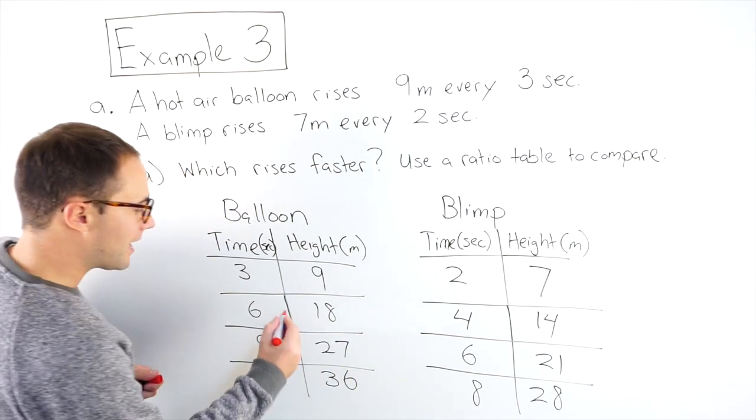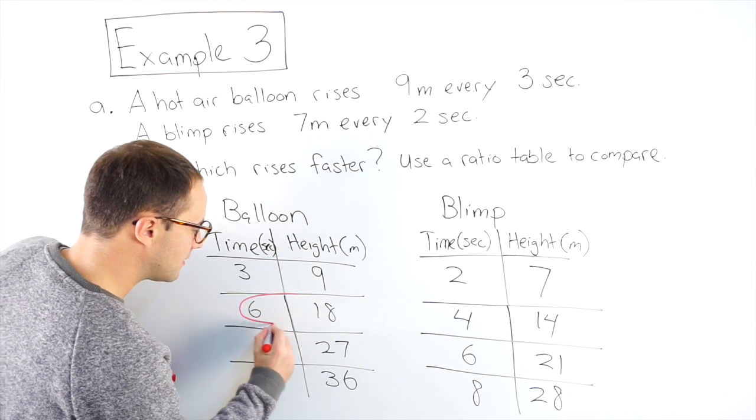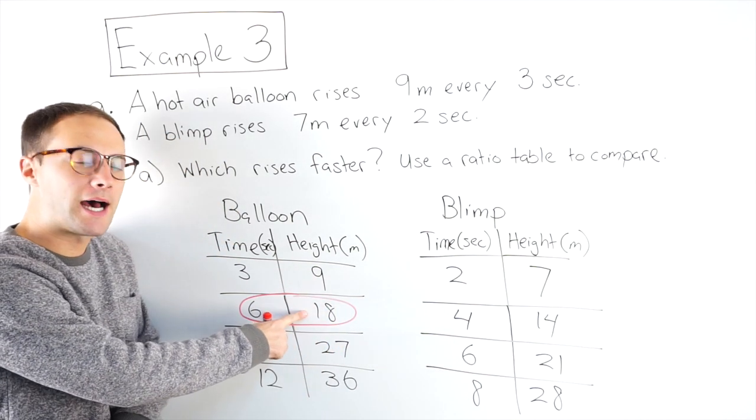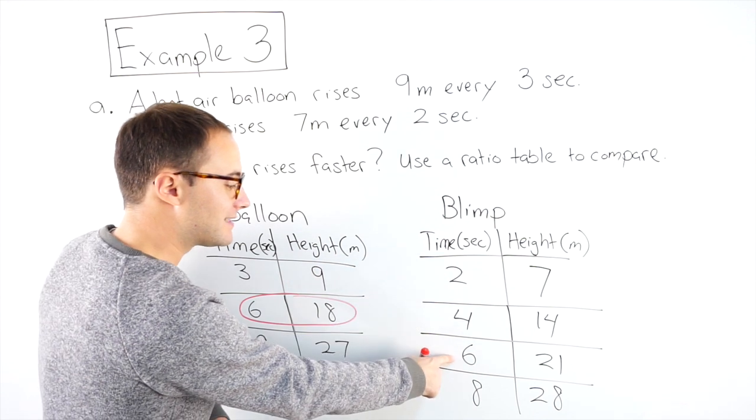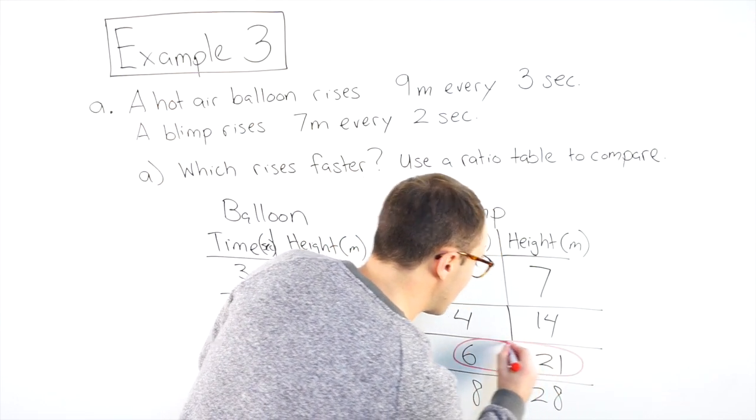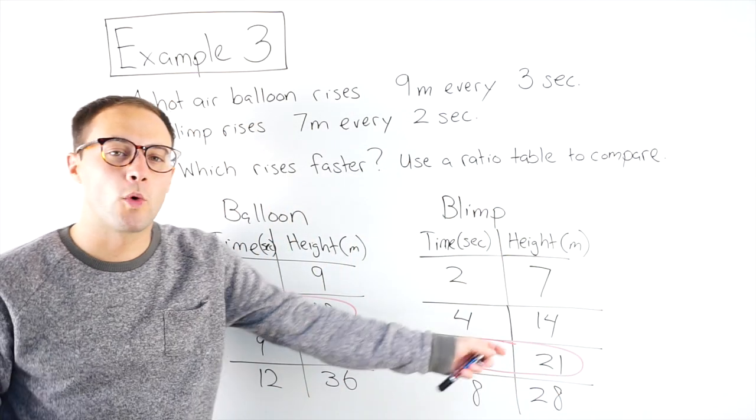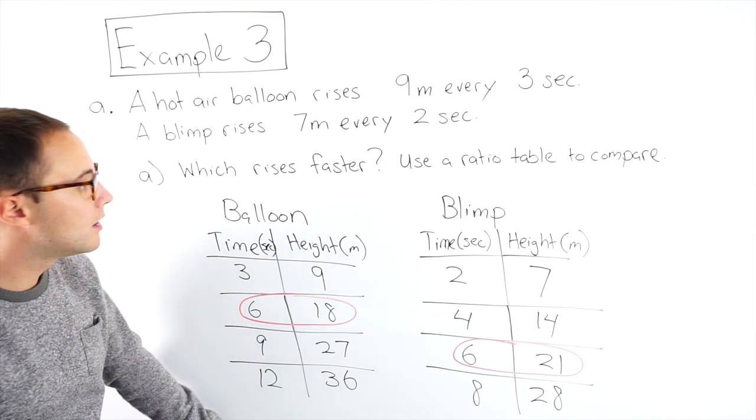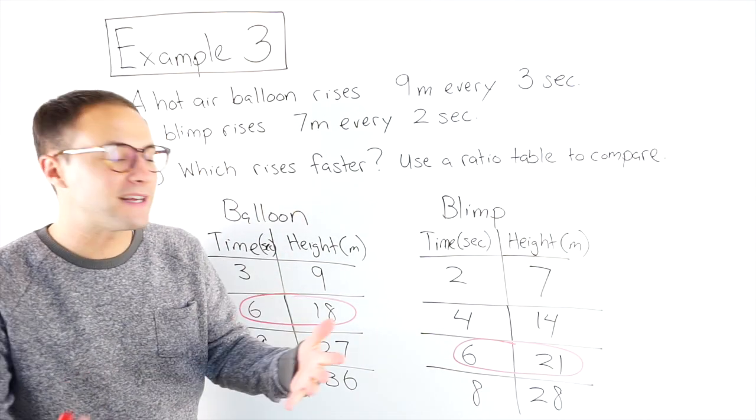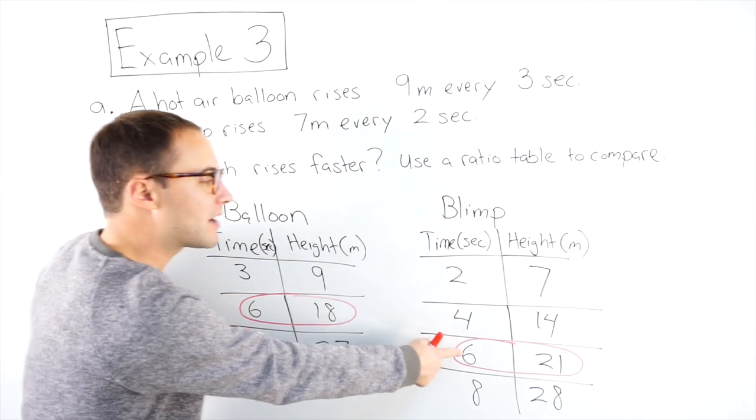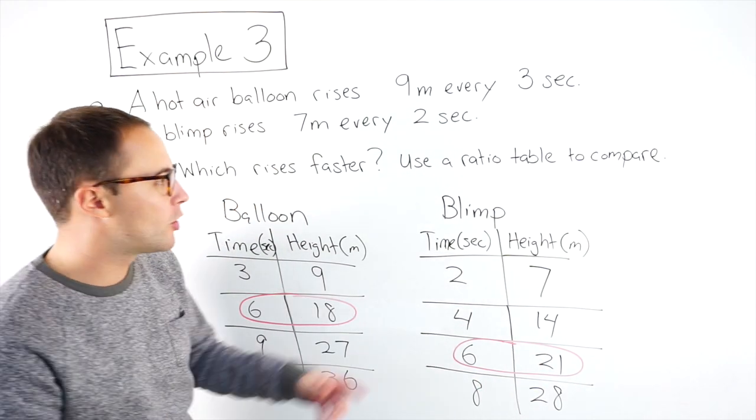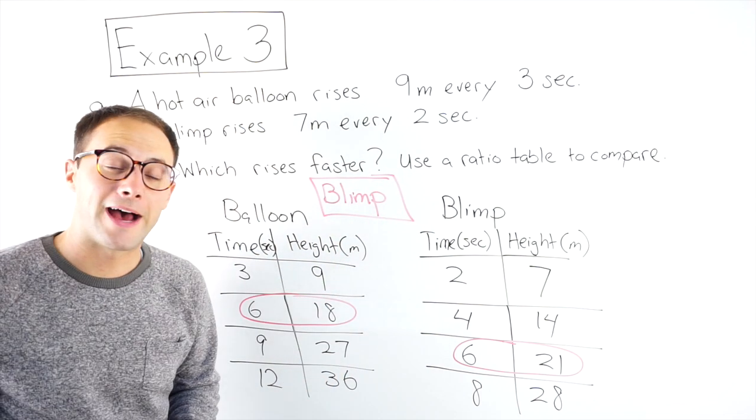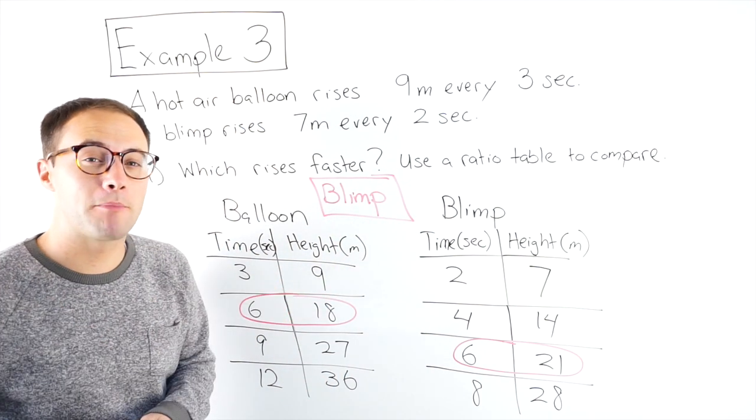I'll just circle here at six seconds. The balloon was 18 meters high. Here at six seconds, the blimp was 20 meters high. So the question is, which rises faster? Well, given the same amount of time, the blimp is higher up. So that would mean the blimp rises faster. That was part A. Now let's try part B.